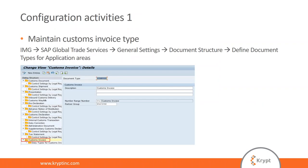What configuration is needed to get this invoice functionality up and running? Firstly, you have to maintain your customs invoice document type in GTS. We've created an invoice document type called Z-Invoice, and in the demo you will see the invoices we're dealing with have this document type. These customizing activities are all accessible from the main GTS menu.